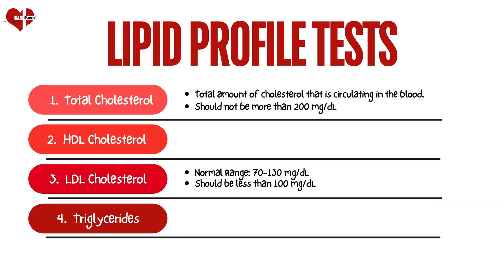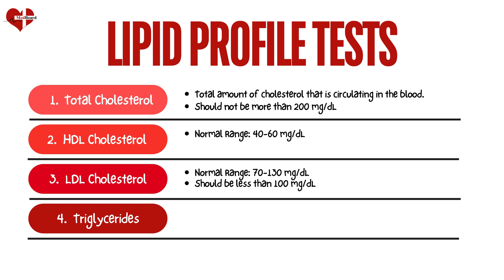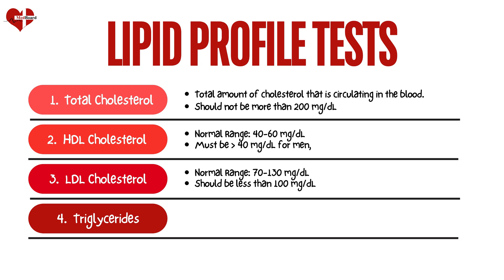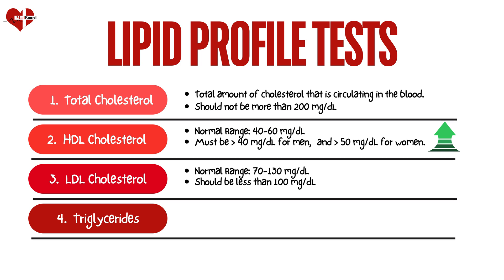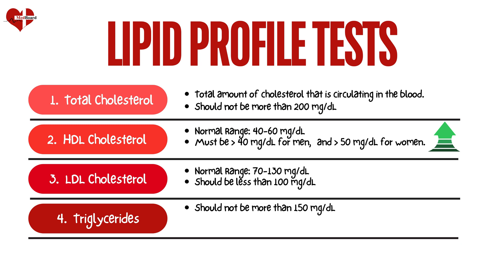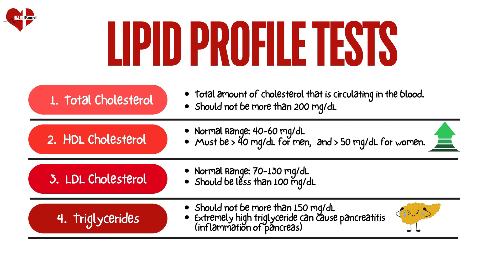HDL has a normal range of 40 to 60 mg per deciliter. It must be 40 mg per deciliter or higher for men and 60 mg per deciliter or higher for women. It is the only number in your lipid panel that you want to be high, as it helps your arteries clear out the cholesterol that your body does not need. Lastly, triglycerides must not be more than 150 mg per deciliter. High levels of triglycerides may cause atherosclerosis, and extremely high triglycerides can also cause acute inflammation of the pancreas.